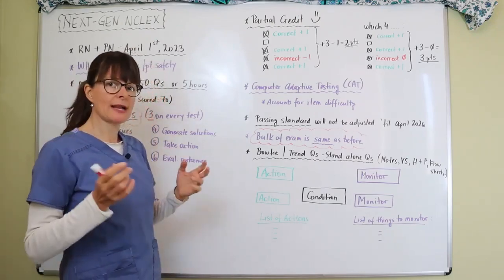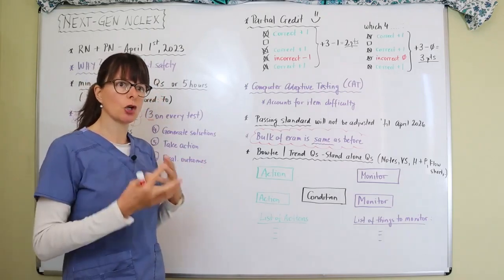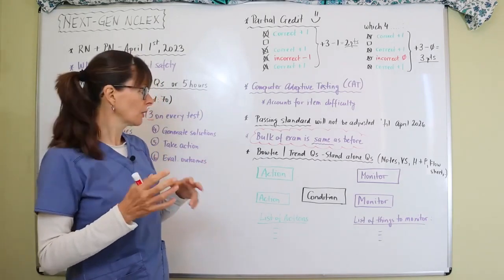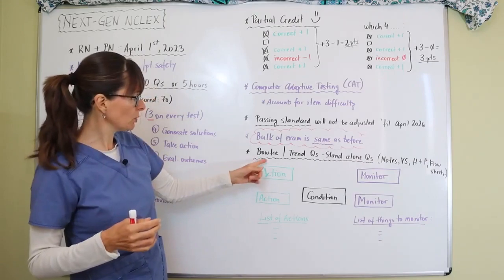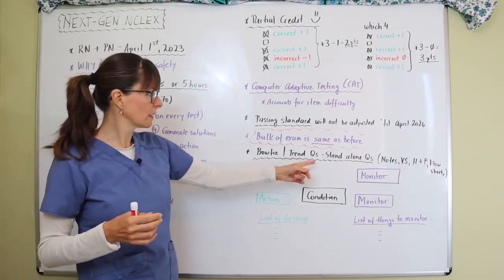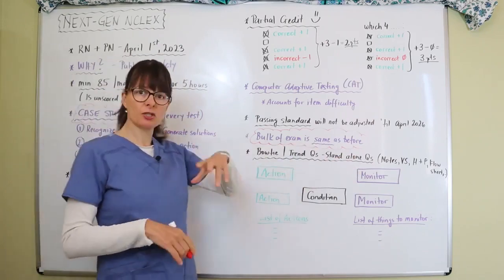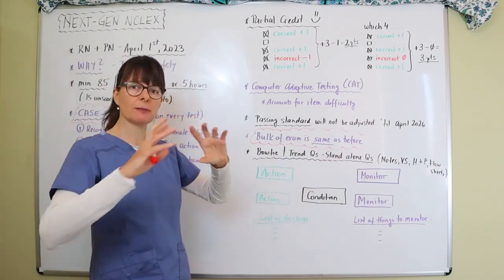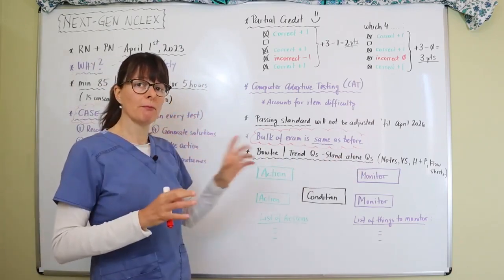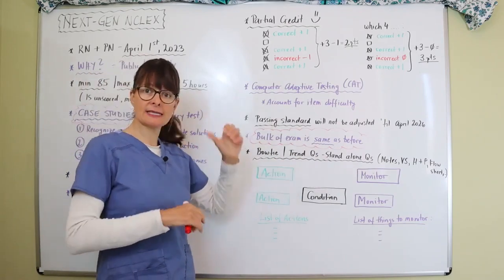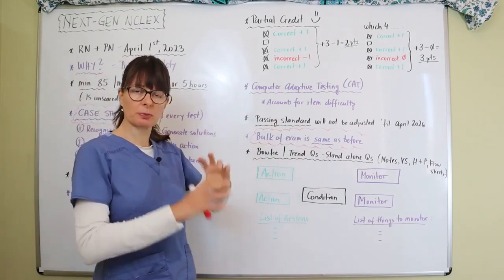And then there is a different type of question that I actually didn't exactly know what the term means. So they're called bow tie or trending questions that are standalone questions. And standing alone means just that: there's one question and there's some data that you have to review, more so than a case study where six questions pertain to the same kind of case scenario.